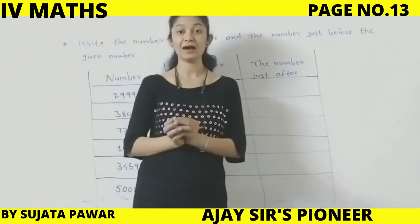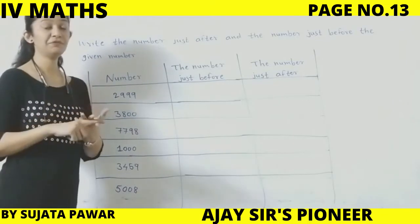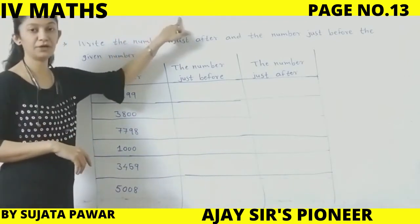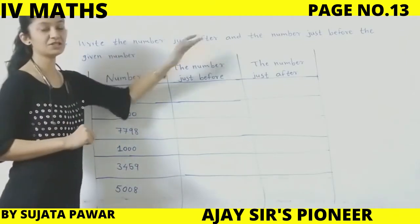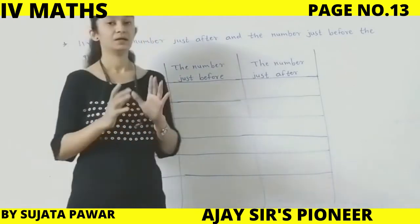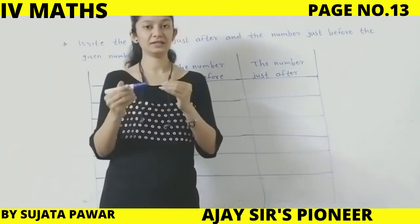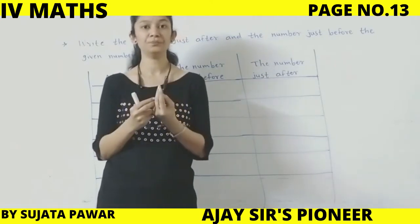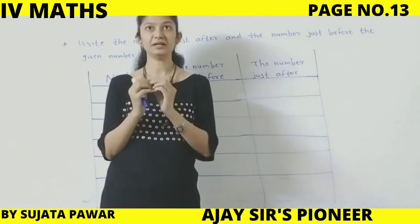Okay children, after understanding how to break up numbers, we will now understand about the number just before and the number just after. We are going to solve our next exercise on page number 14. Just before means bilkul usi number ke pehle kaun sa number aata hai — like 2 after 3, and 2 before 1. Just before and just after. For example, 24: after is 25, before is 23.